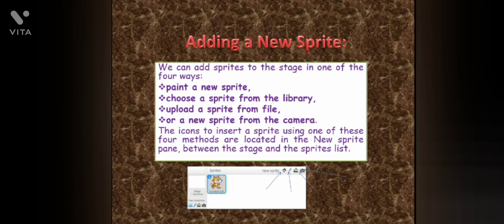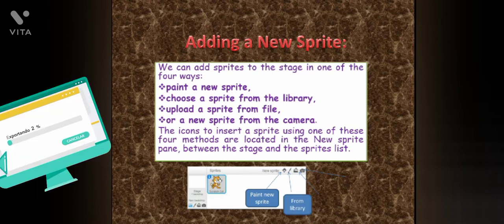Fourth, new sprite from camera. You can add a sprite using your webcam by clicking on a picture. The icons to insert a sprite using one of these four methods are located in the new sprite pane between the stage and the sprite list.